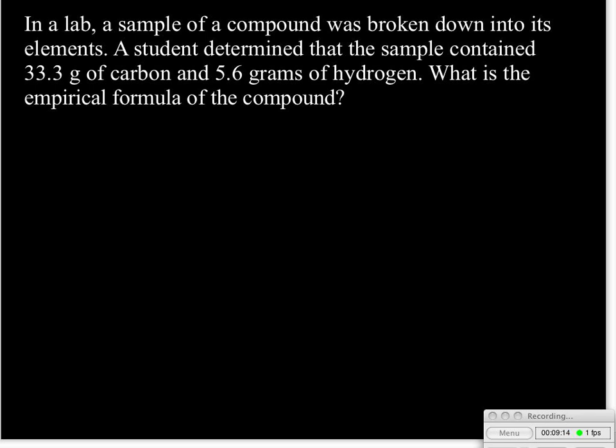So we have another problem here. In a lab, a sample of a compound was broken down into its elements. A student determined that the sample contained 33.3 grams of carbon and 5.6 grams of hydrogen. What is the empirical formula of the compound? I would recommend that you pause this at this point and try to work this out yourself. Remember what we said about the little poem and which steps you may want to skip.